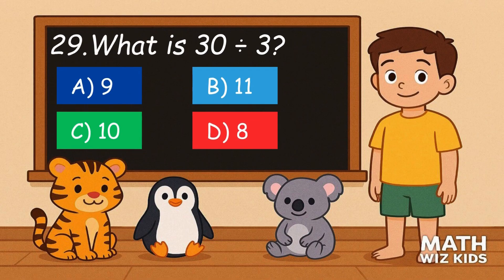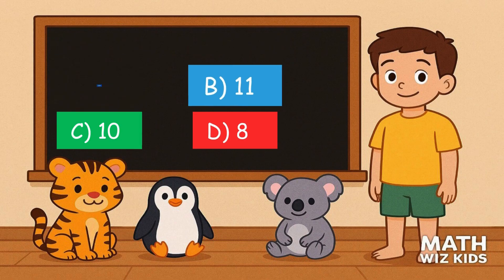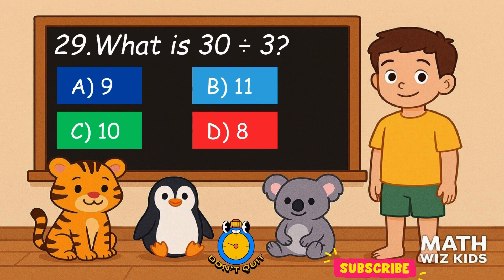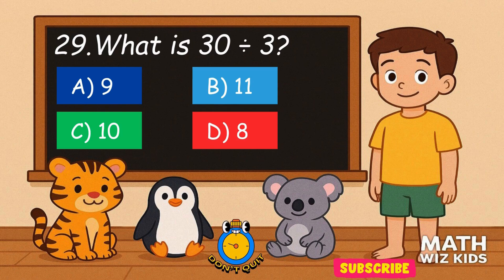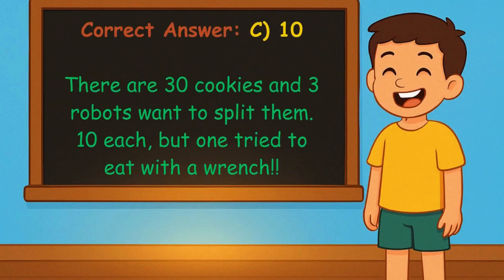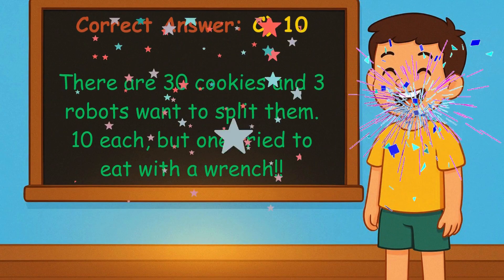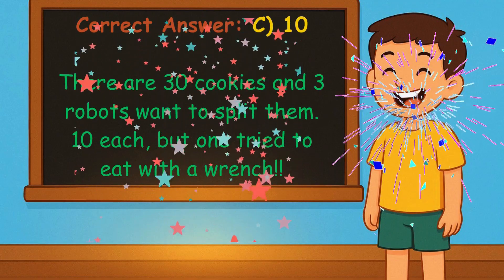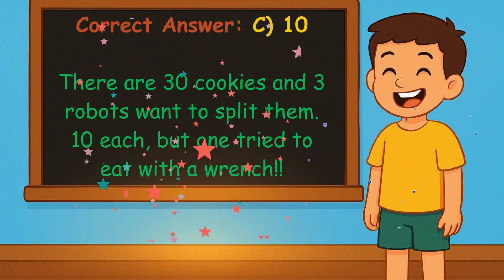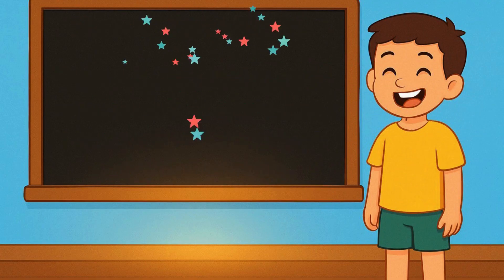29. What is 30 divided by 3? Is it A, 9, B, 11, C, 10, or D, 8? Correct answer is 10. There are 30 cookies and 3 robots want to split them. 10 each, but one tried to eat with a wrench.